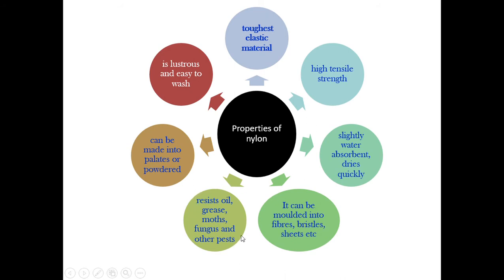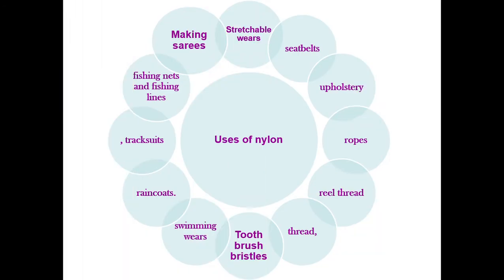Nylon resists oil and grease, resists pests, and can be made into pellets or powder. It is easy to wash. Uses of nylon include stretchable wear, seat belts, hair accessories, upholstery, ropes, reel threads, toothbrush bristles, swimwear, raincoats, tracksuits, fishing nets, fishing lines, and saris.